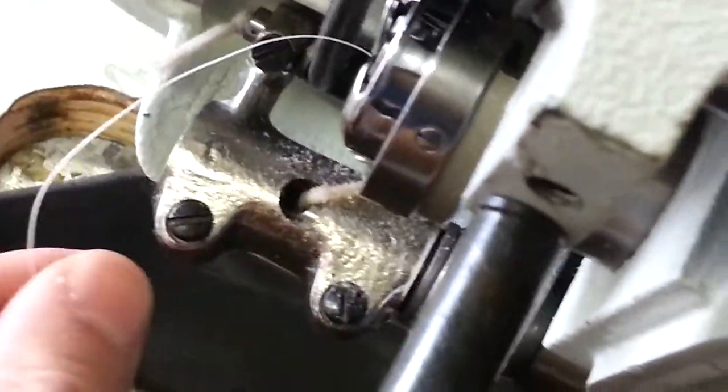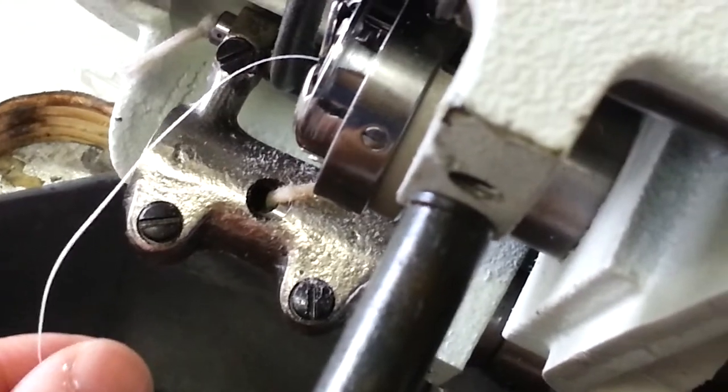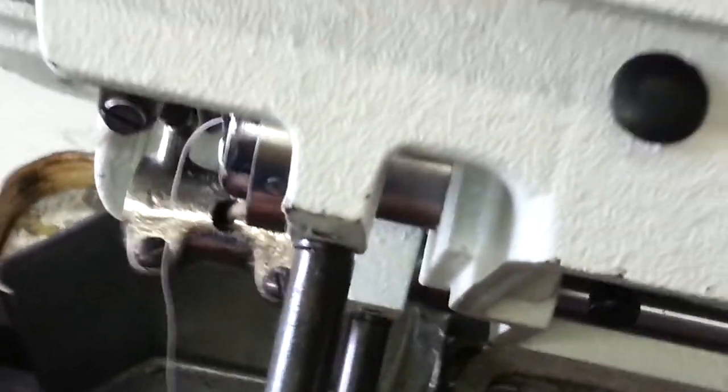Also, make sure that this thread, you've probably got about four to six inches of thread and it's hanging off to the left side of the bobbin case. Now you're going to put the machine down.